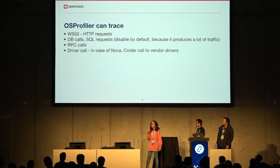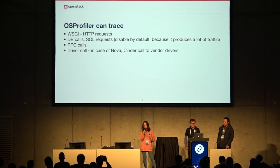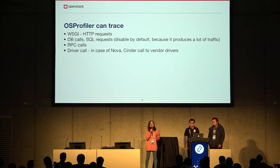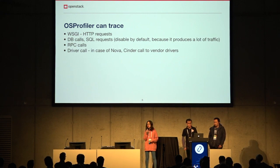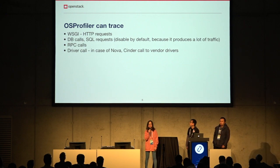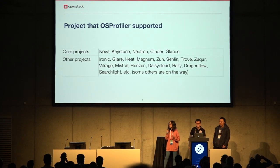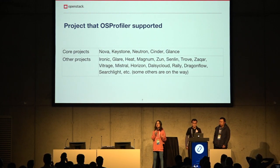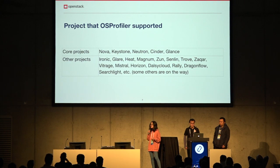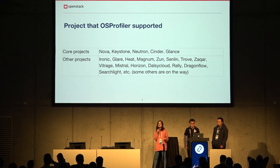OS profiler can trace WSGI, RPC calls, and driver calls. In the case of Nova Insider, it can also trace the cause of vendor drivers. Projects already supported include core projects: Nova, Keystone, Neutron, Cinder, and Glance. There are also other projects: Ironic, Glare, Heat, Magnum, Zun, and others you can see on the slide.